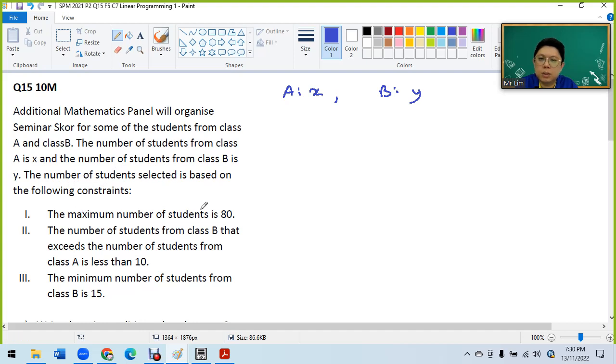The maximum number of students is 80. The number of students from class B that exceeds the number of students from class A is less than 10. The minimum number of students from class B is 15.